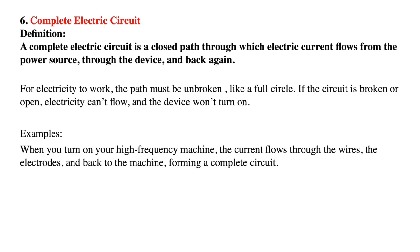Number six, complete electric circuit. A complete electric circuit is a closed path through which electric current flows from the power source through the device and back again. For electricity to work, the path must be unbroken like a full circle. If the circuit is broken or open, electricity cannot flow and the device will not turn on. For example, when you turn on a high frequency machine, the current flows through the wires, the electrodes, and back to the machine, forming a complete circuit.